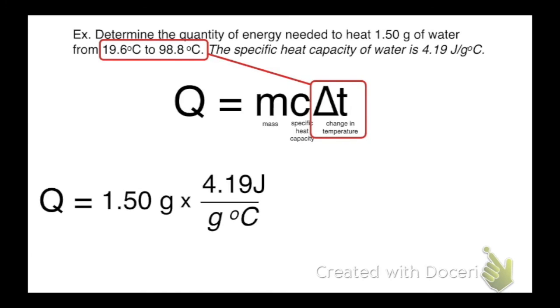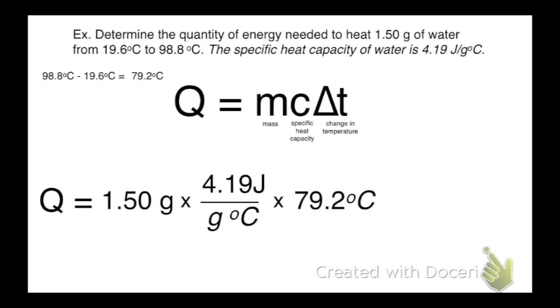Then I'm going to times that by the change in temperature. So this is a little trickier. We have to subtract the temperature. 98.8 subtract 19.6 gives us the change. So it changed by 79.2. So I put in my 79.2. And then I cross out my units. Grams cancel. Degrees Celsius cancel. And I'm left with joules. My answer comes out to 497.7. And I can round that to 498 joules. Okay, and that is how you do it.